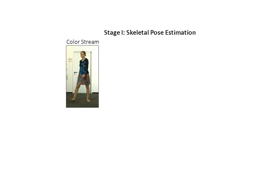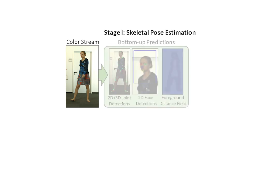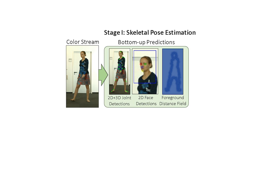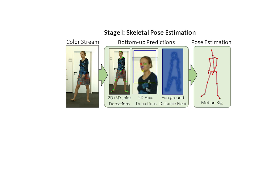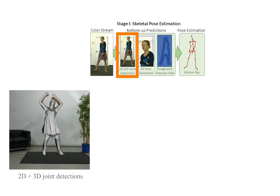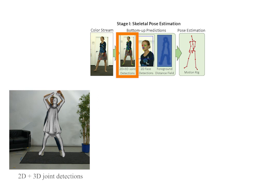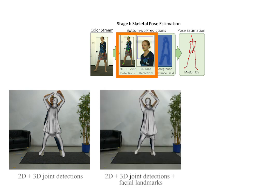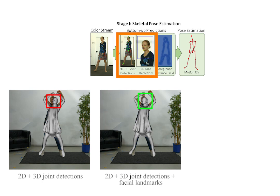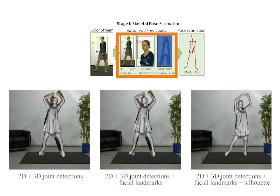During real-time tracking, we fit the template to the input video using a novel two-stage GPU optimization method in a coarse-to-fine manner. In the first stage, our real-time skeleton pose optimizer fits the skinned template to 2D and 3D pose detection, to sparse detected facial landmarks, and to the foreground silhouette. Our pose detection uses the state-of-the-art real-time method of VNect. While template rigging with VNect pose detection alone shows plausible results, there still remain artifacts. Adding facial landmarks clearly improves the head pose, and the silhouette term gives a more accurate pose in terms of image overlay.